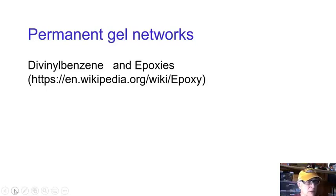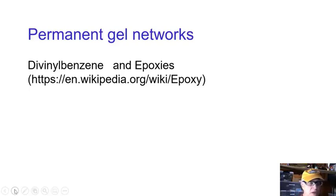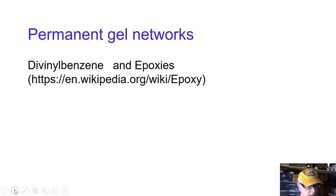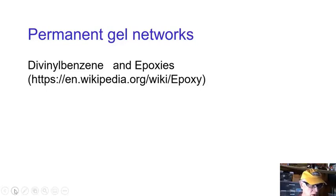I want to talk about permanent gel networks. We'll use styrene-divinyl benzene as an example, and I'll sketch that out because there was a question about pushing electrons. It's not as hard as it seems — it just takes practice and it's a transient thing for us in this course. Then we'll talk a little bit about epoxies.